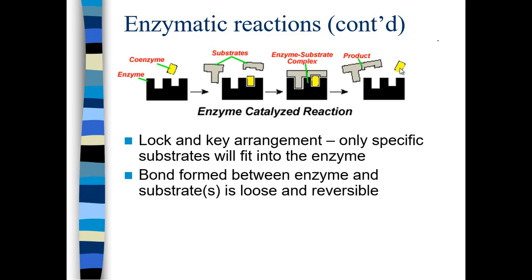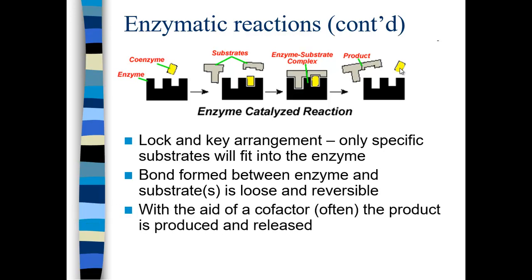The bond formed between the enzyme and the substrate is loose and reversible. By having a loose and reversible bond, once that product is formed, it can drift away. With the aid of a cofactor — not all enzymes have cofactors, but most do — the product is produced and then released.